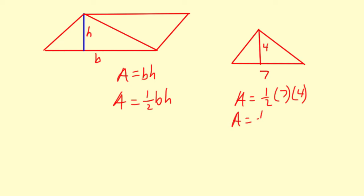So area equals one-half. 7 times 4 which is 28, so then 28 there. And then area is one-half times 28. 28 divided by 2 is the same thing. That's 14. So the area equals 14.